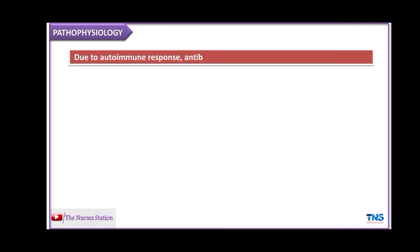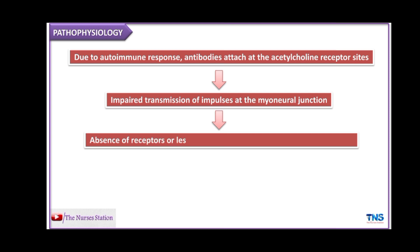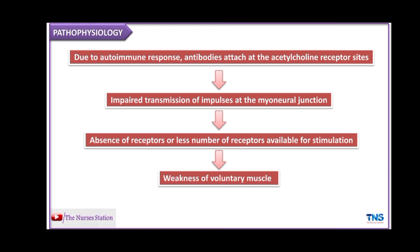Pathophysiology: Due to autoimmune response, autoantibodies directed at the acetylcholine receptor sites bind to the acetylcholine receptors and impair the transmission of impulses at the myoneural junction due to absence of receptors or a reduced number of receptors available for binding to acetylcholine. This finally leads to weakness of the voluntary muscles.